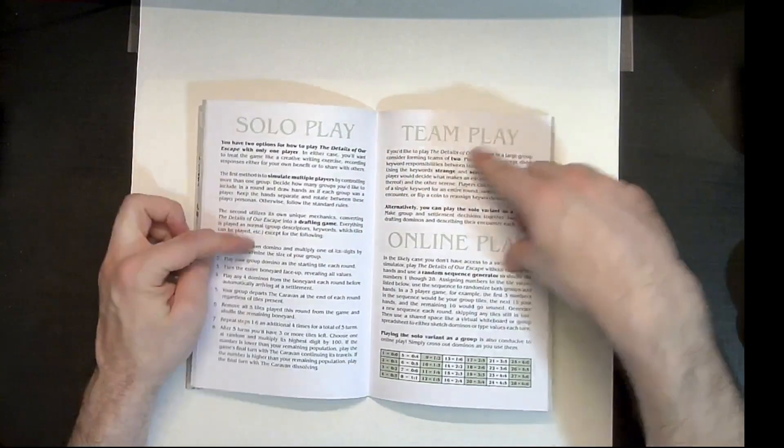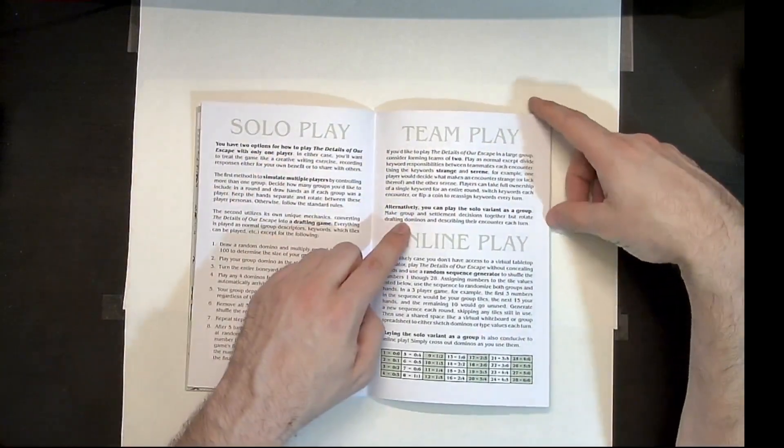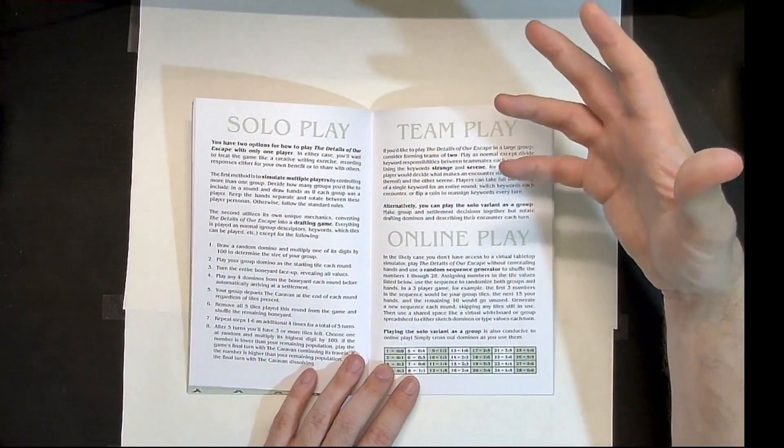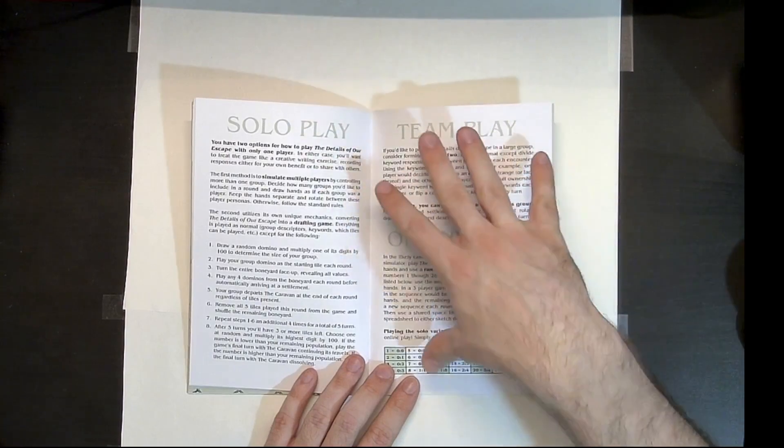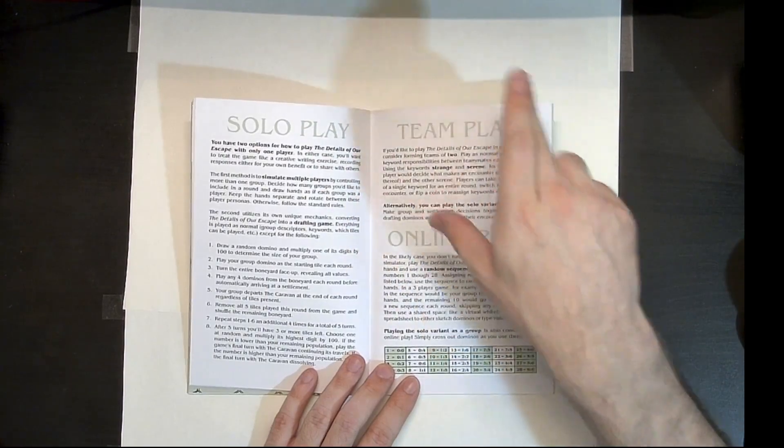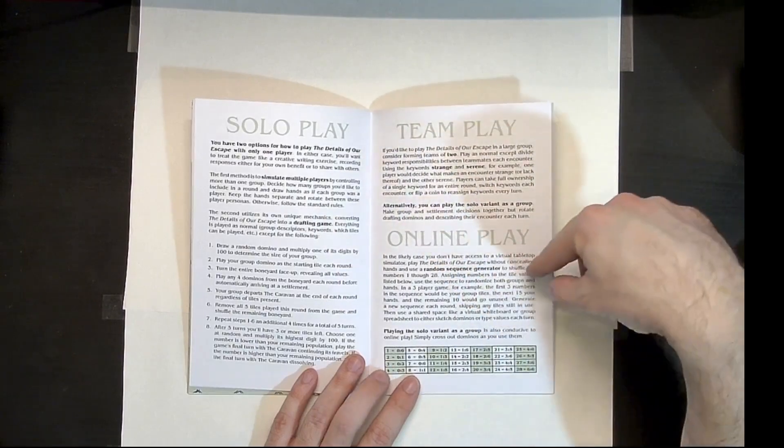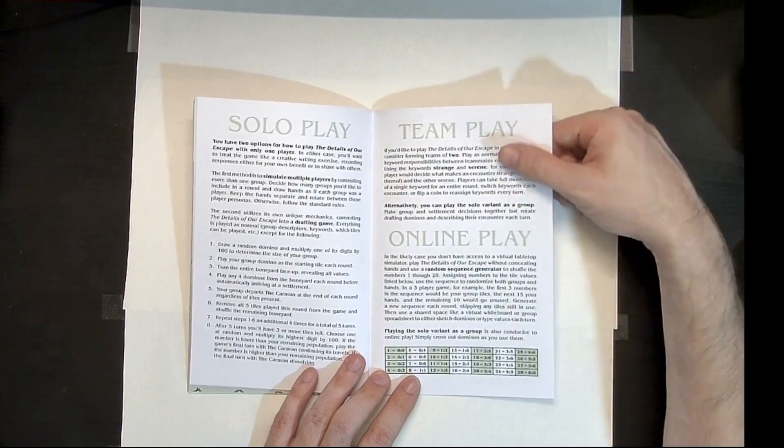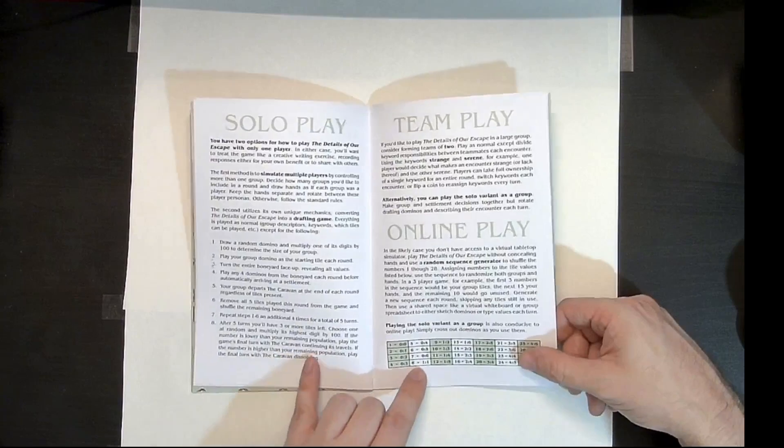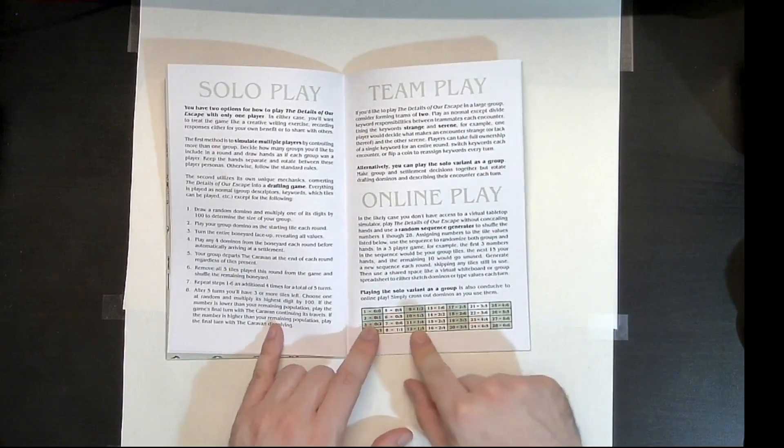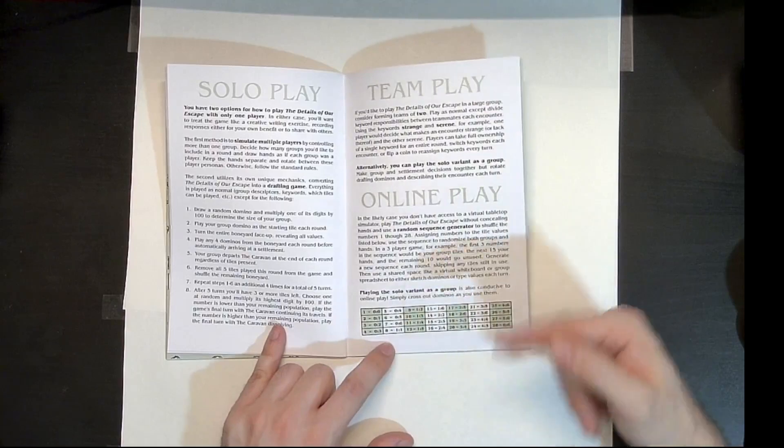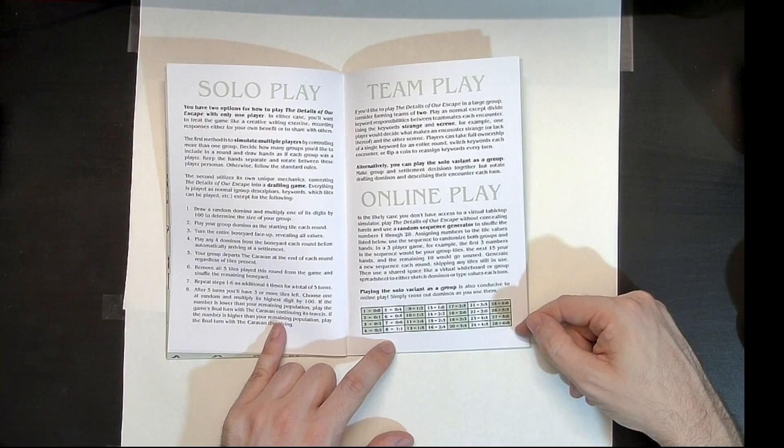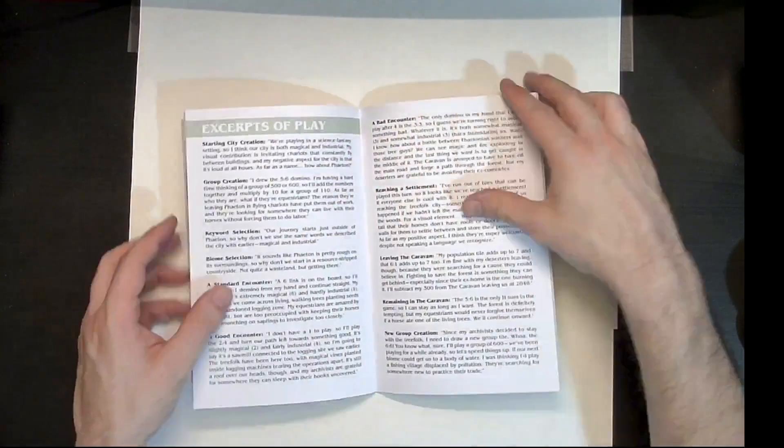And here are the rules for solo play. Here are the rules for team play. So you might have, if you're playing this as a group and you have more than eight people in your group, maybe, or if you want to play as a group of eight, but like in pairs, here's a rule for that. Here we have rules for online play using random sequence generators to determine exactly what the dominoes are. Or you could do this if you don't have dominoes. So basically it says here, basically you use a random number generator, create any random number between one and eight, one and 28. And then assign those and play them out as you go.